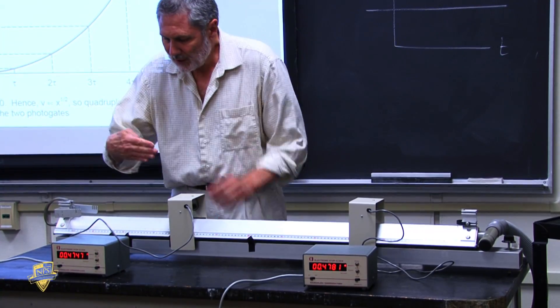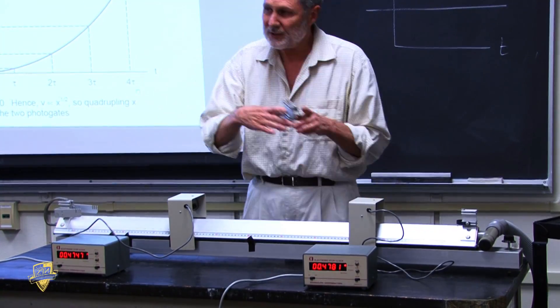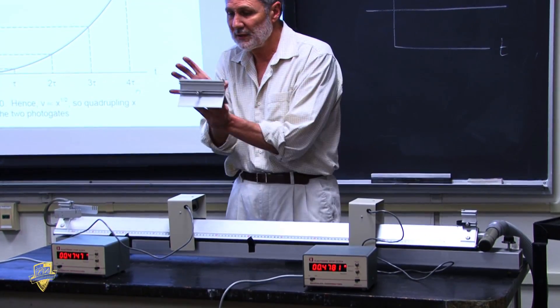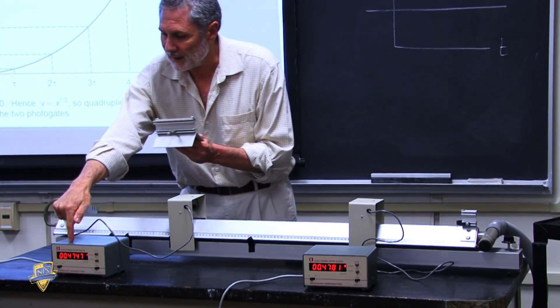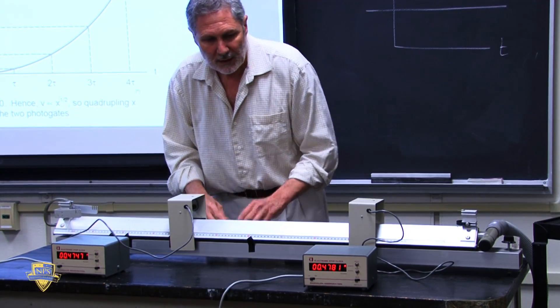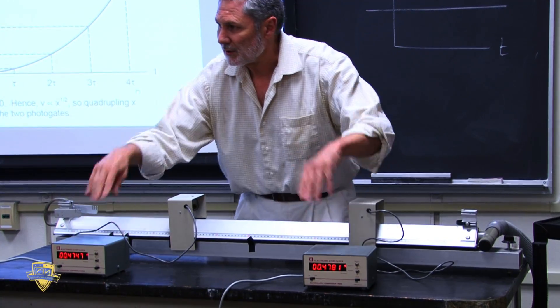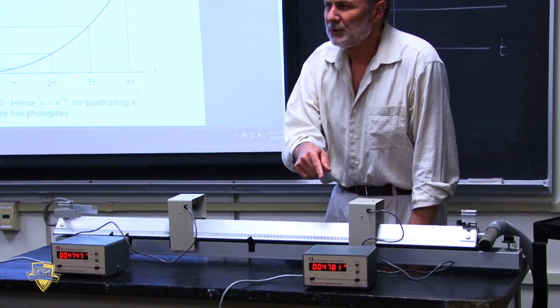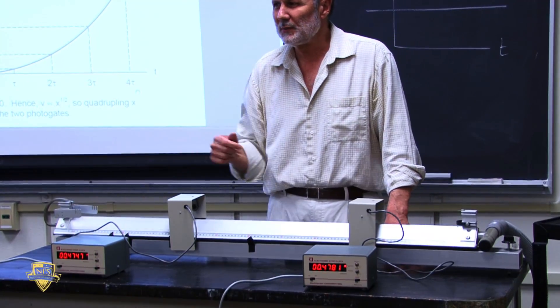If we know the time this is interrupted and we measure this distance, we can get the average velocity. We'll take this distance divided by that time, and that tells us the average velocity. Now, these two times should be pretty near each other. This time should be a little bit bigger than this time or a little bit less?